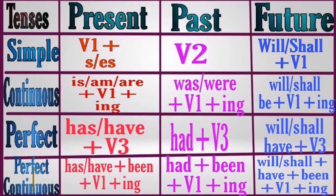I have made separate lessons on 'is/am/are,' 'has/have,' and 'was/were' — the links are in the description box. For present perfect continuous, the structure is 'has/have' plus 'been' plus V1 plus '-ing.' If you remember these four present tense rules, you can relate them to past tense and future tense to know all 12 rules.